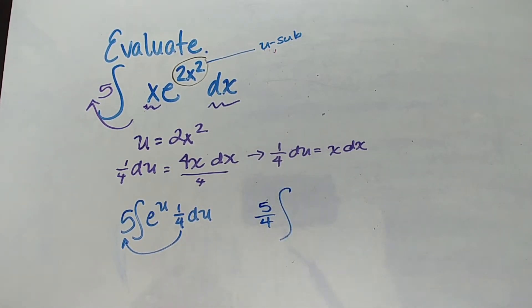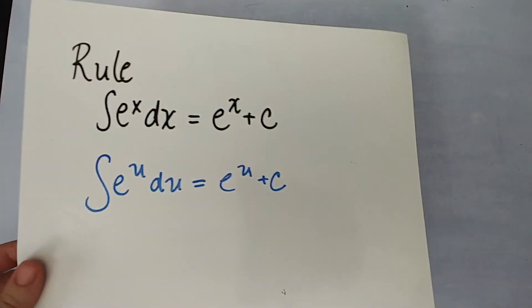So five times one-fourth is just five-fourths right? Let's not let the elementary math get us down. e to the u du. Okay so now it looks just like our rule right? Here's our rule if you forgot.